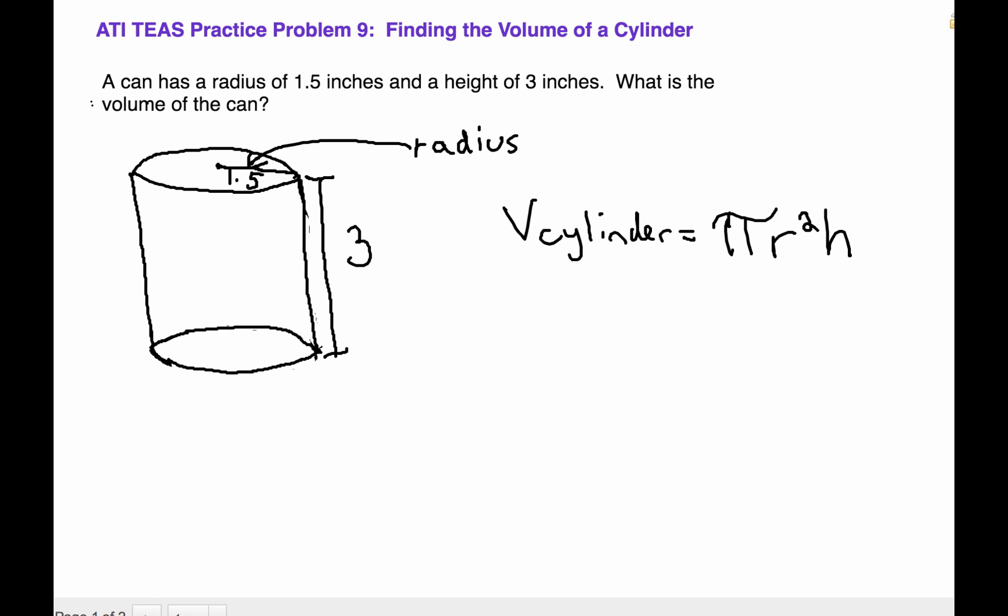Today we're going to talk about finding the volume of a cylinder. A can has a radius of 1.5 inches and a height of 3 inches. What is the volume of the can?